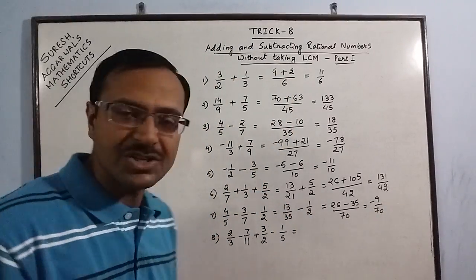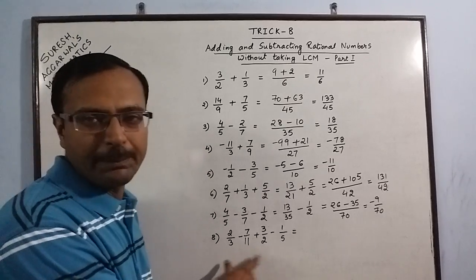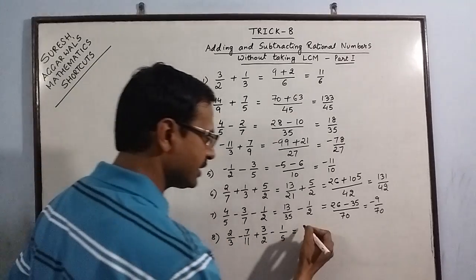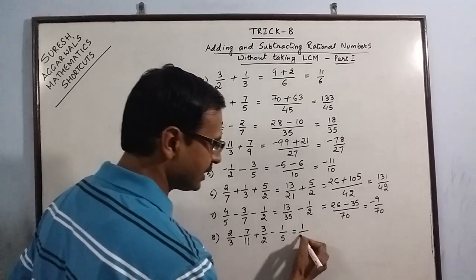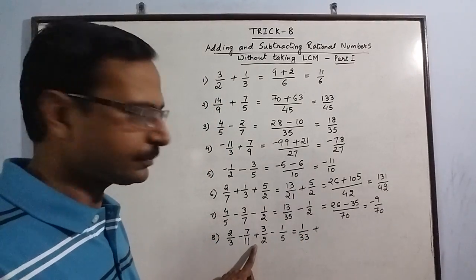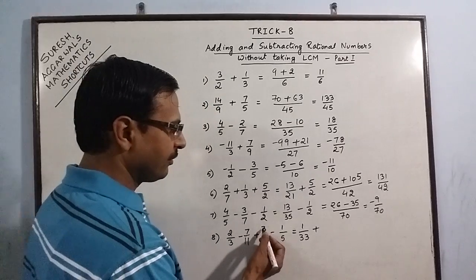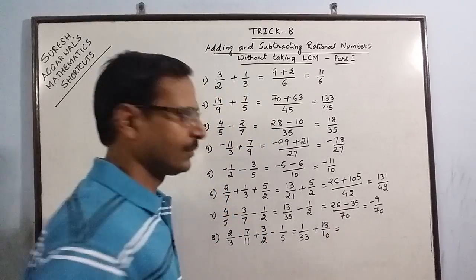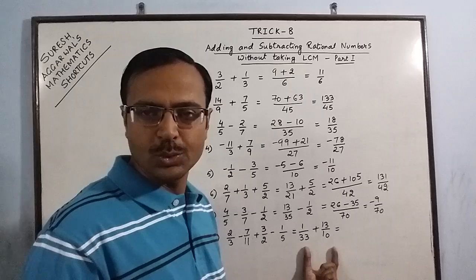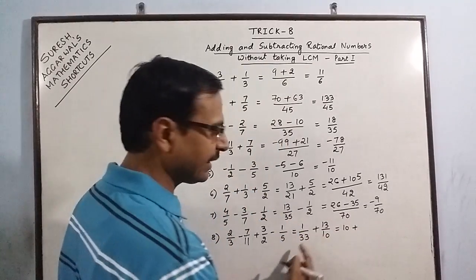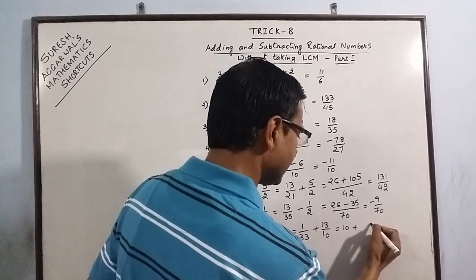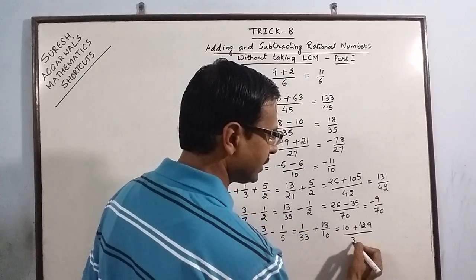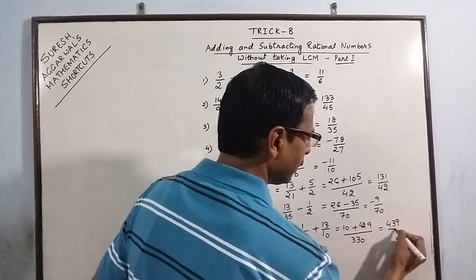Now we have one example involving four rational numbers. We reduce them in pairs. The first pair gives 22 minus 21 is 1, over 3 times 11 is 33. Now reduce the second pair: 15 minus 2 is 13, over 2 times 5 is 10. Now apply the same operation to these two results: 10 times 1 is 10, plus 13 times 33 — 13 times 3 is 39, carry 3, 13 times 3 is 39 plus 3 is 42, so 13 times 33 is 429. The numerator is 10 plus 429 is 439, over 33 times 10 is 330. The final answer is 439/330.